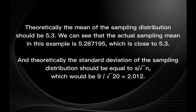Theoretically, the mean of the sampling distribution should be 5.3. We can see that the actual sampling mean in this example is 5.28715195, which is close to 5.3 when rounded off. Theoretically, the standard deviation of the sampling distribution should be equal to σ over square root of n, which would be 9 over square root of 20, equals 2.01.